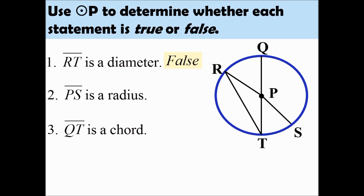Number 2: Line segment PS is a radius. That is true. Line segment PS goes from the center of the circle to point S, which is on the circle. P is the center of the circle and S is a point on the circle. Therefore, that line segment is a radius. Statement number 2 is true.